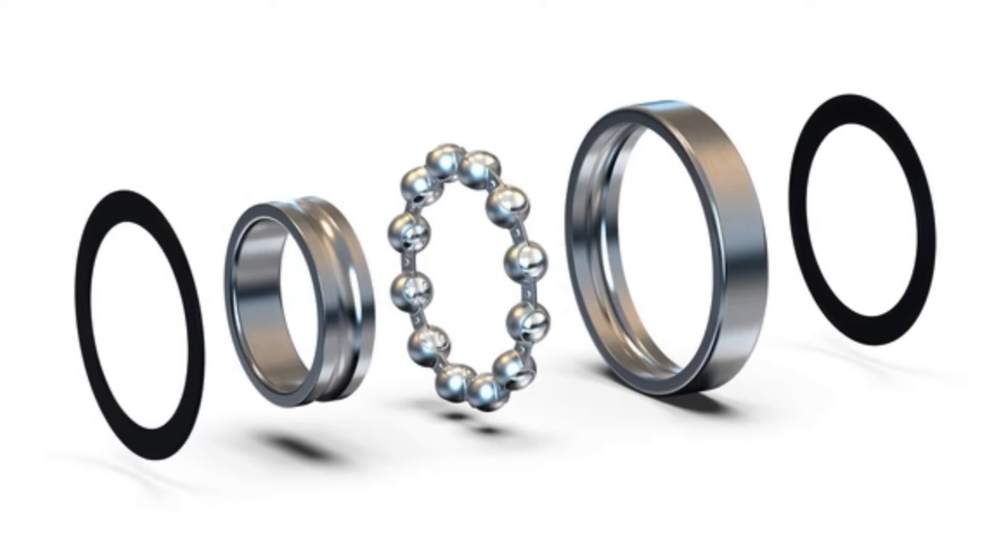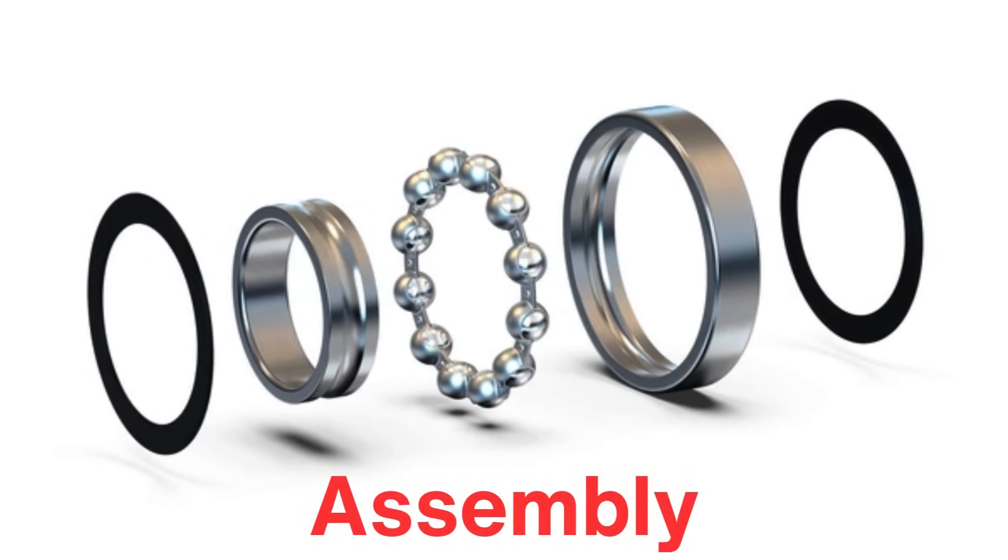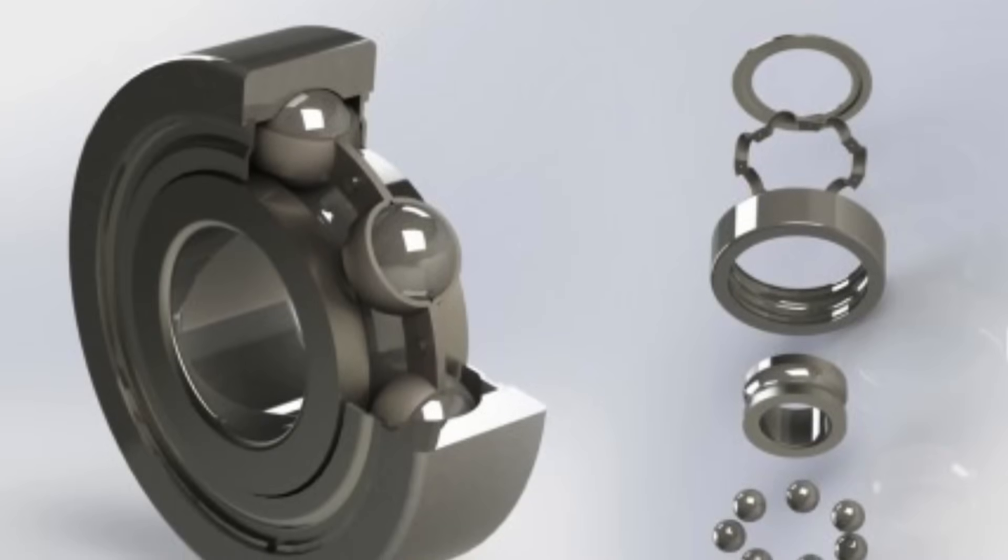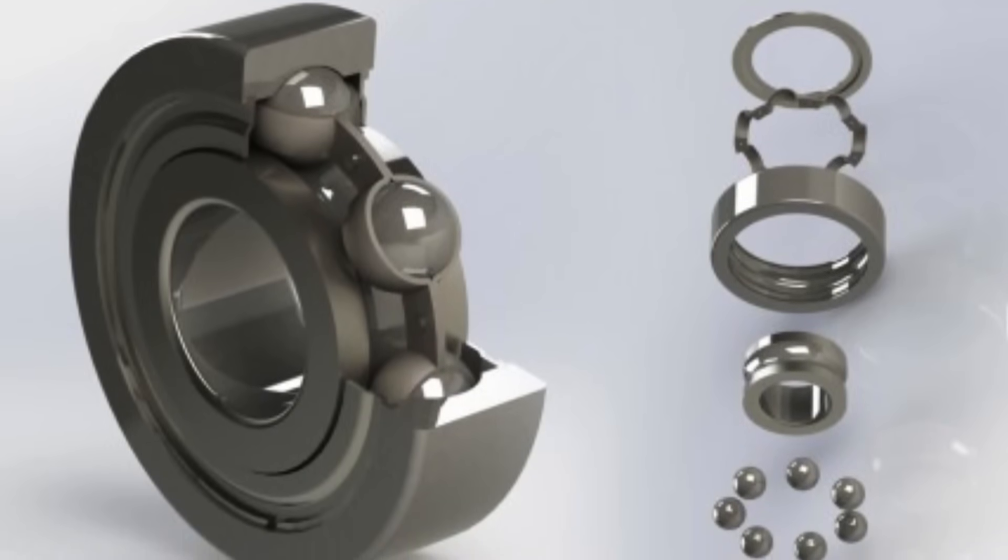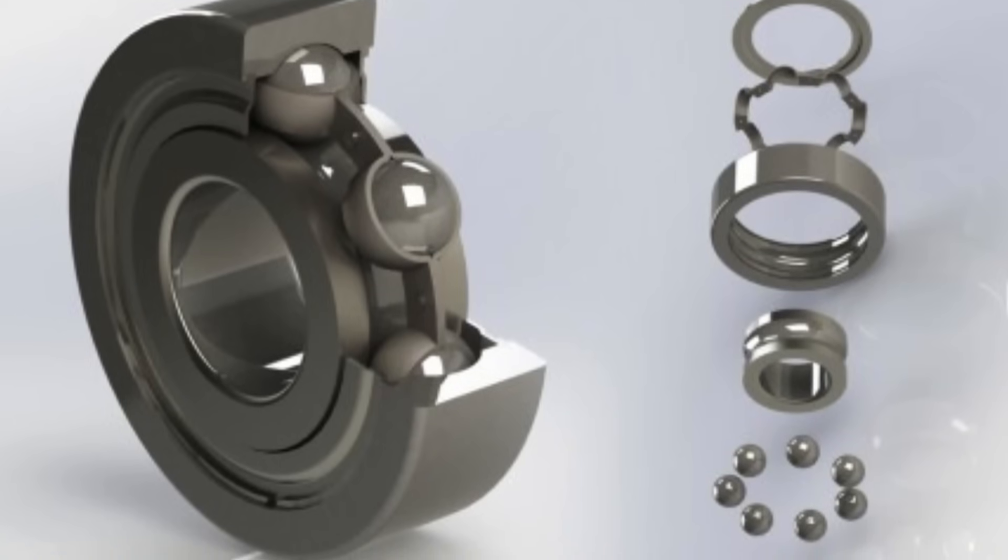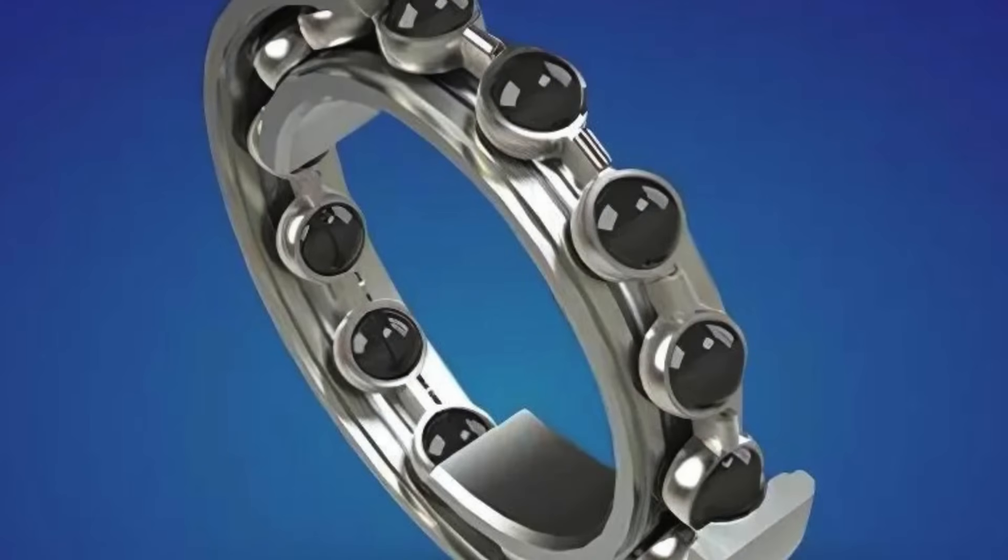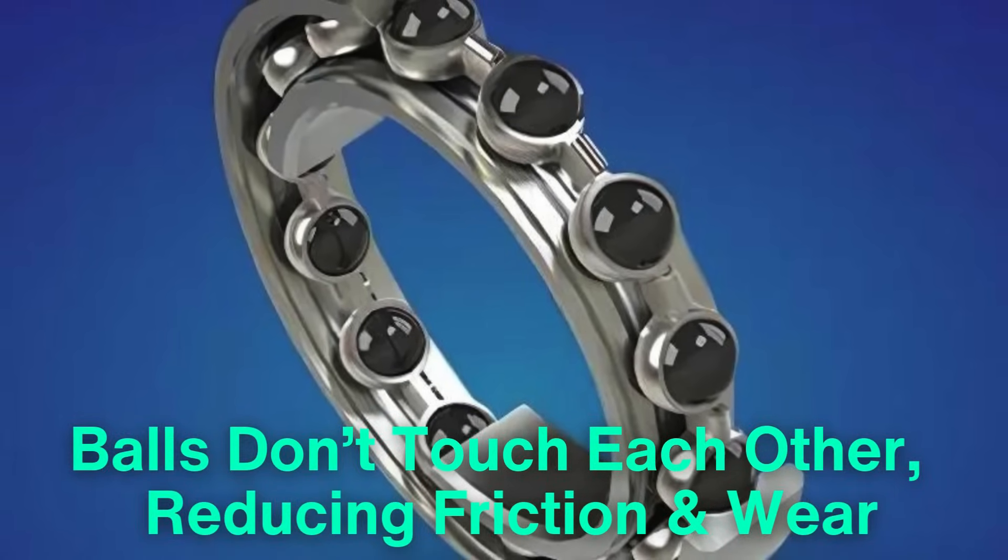Once the balls, inner rings, and outer rings are all machined and treated, it's time for assembly. The inner ring is placed inside the outer ring, and the balls are inserted into the space between the two rings. A cage or separator is also installed to keep the balls evenly spaced. The cage ensures that the balls don't touch each other, reducing friction and wear.